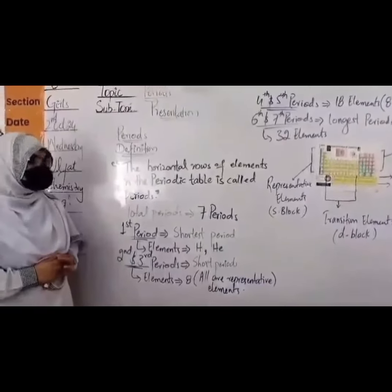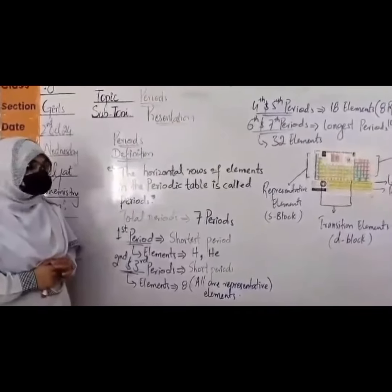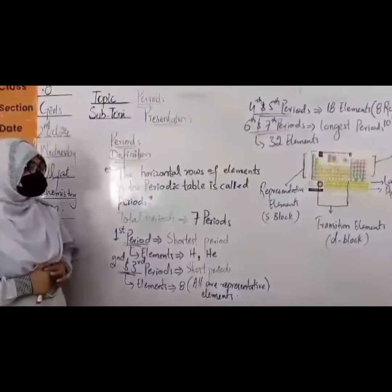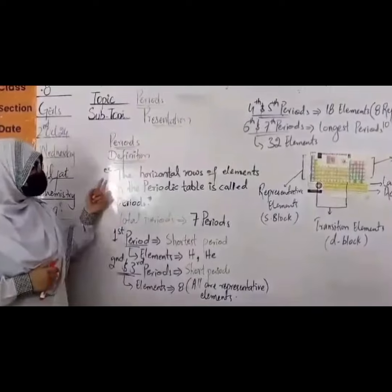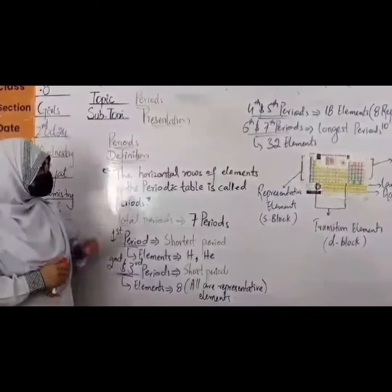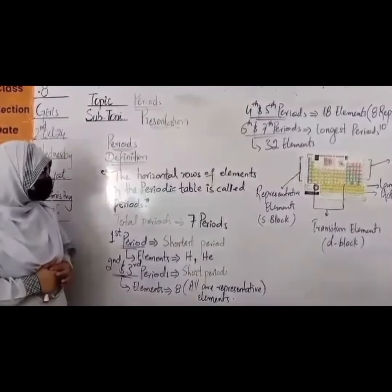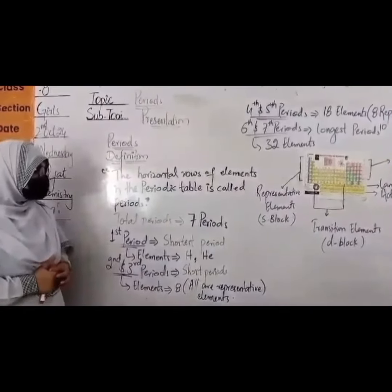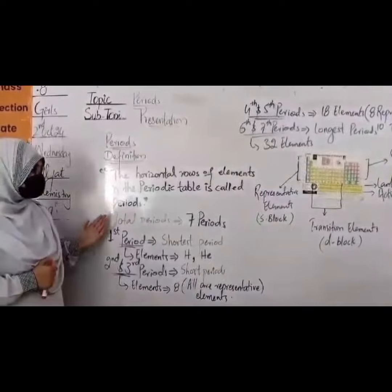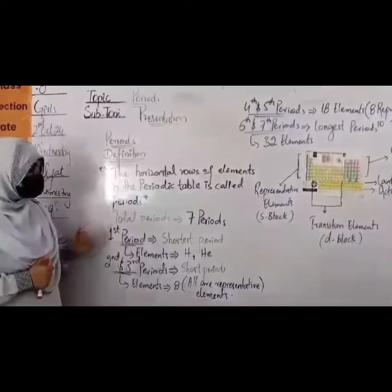First of all, we define periods. What is a period? The horizontal rows of elements in the periodic table are called periods. There are seven periods in the periodic table.